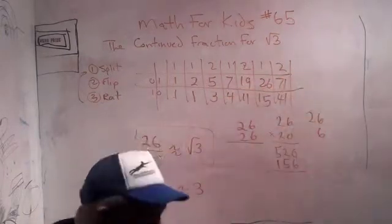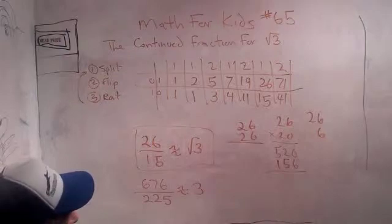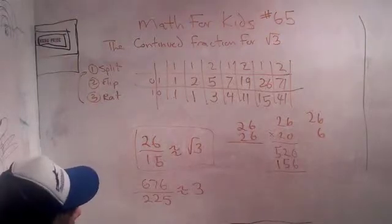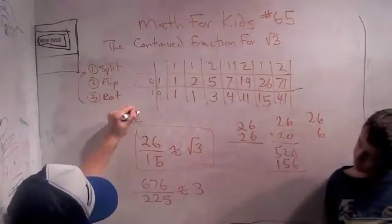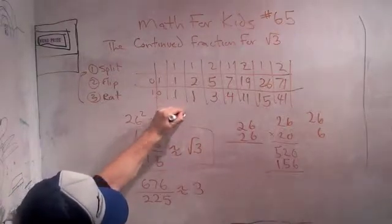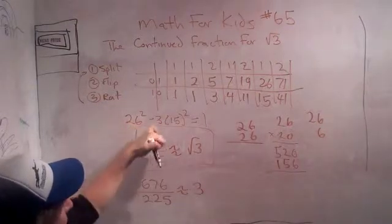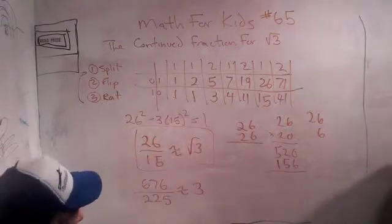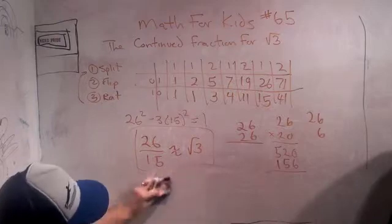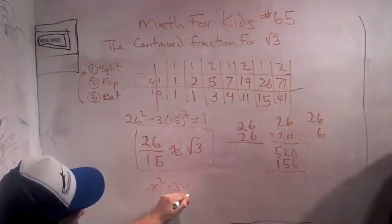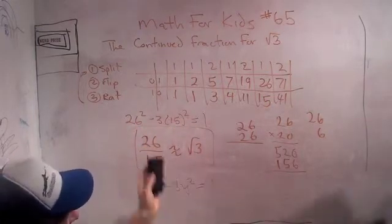You can keep going much further and get better and better approximations to the square root of 3, but you'll never be equal to the square root of 3. One thing I want to show you is that this says 26 squared minus 3 times 15 squared equals 1. The whole thing we're going to be talking about this week is equations like this: X squared minus something times Y squared equals 1. This shows how you can go about solving them and getting solutions from the continued fraction.